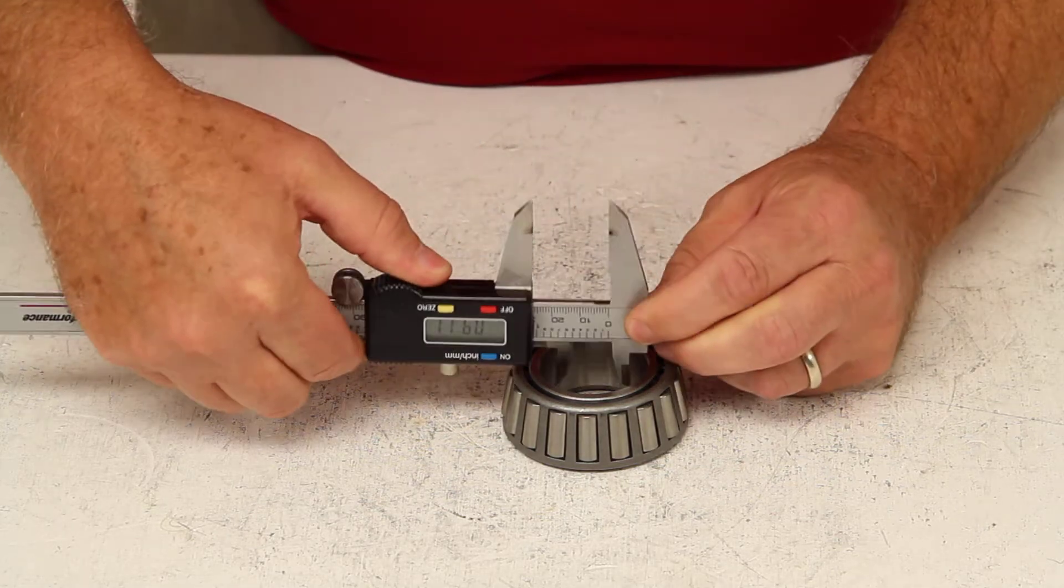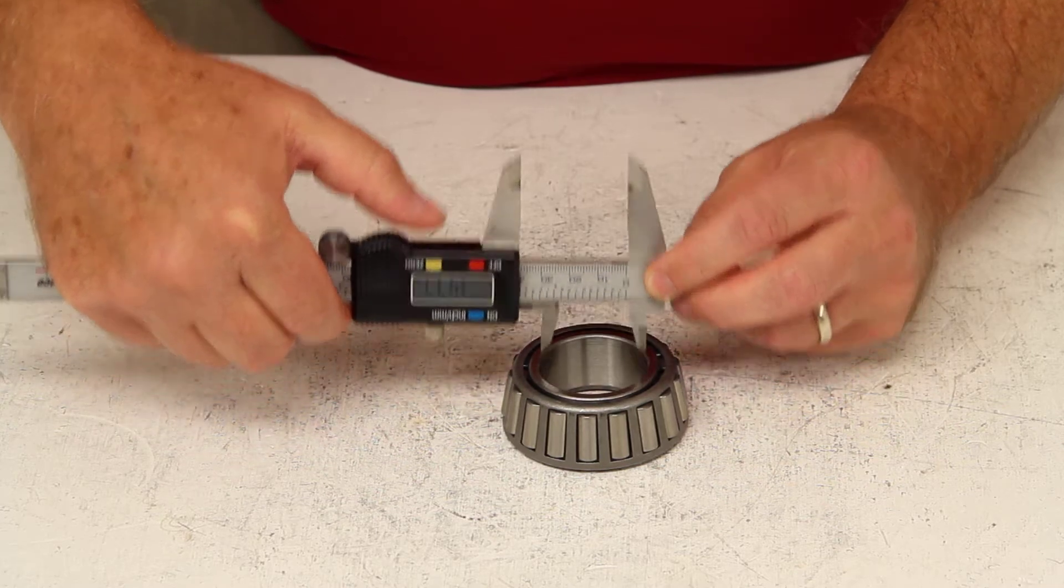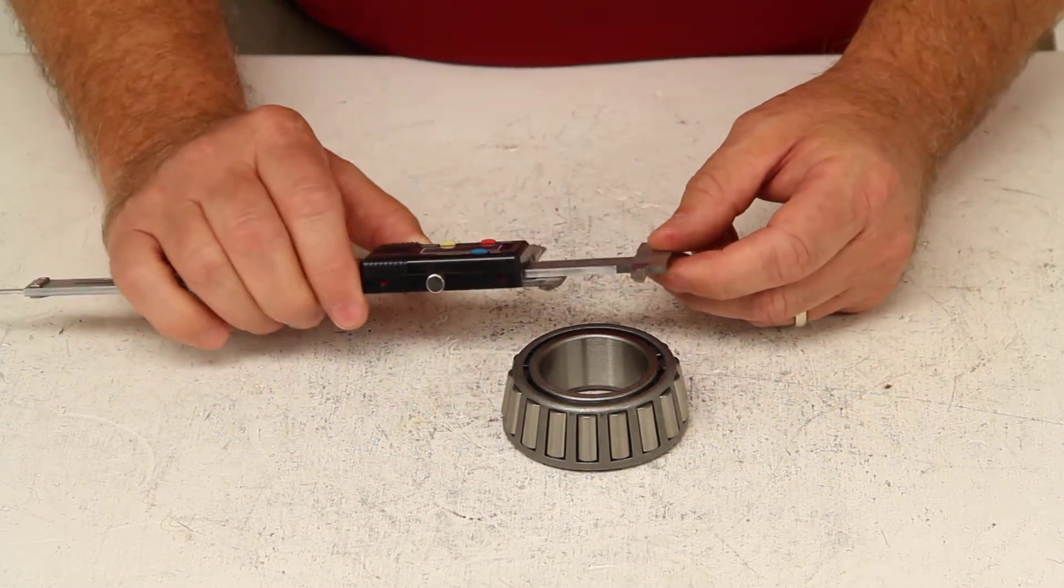So in this case, if we measure the inner diameter of this bearing, it would be 1.5 inches.